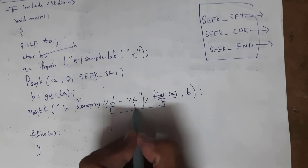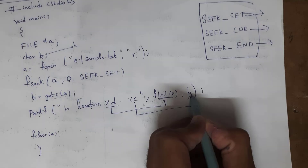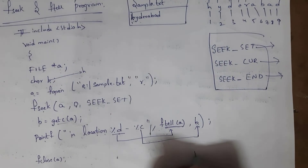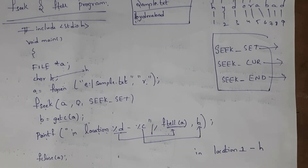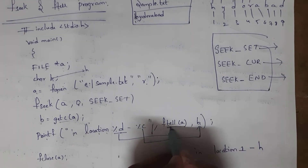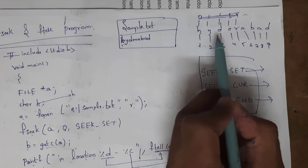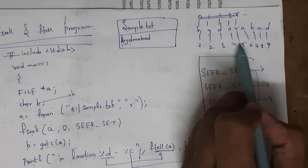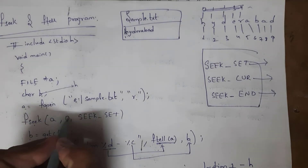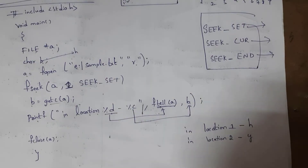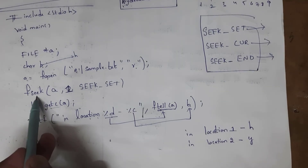To print the output I written printf with format specifiers: %d for ftell(a) which gives the current location, and %c for character B. The ftell function tells the current cursor location. My file text is 'Hyderabad', so H is at location 1, Y at location 2, D at location 3, and so on. The output would be: in location 1, H.